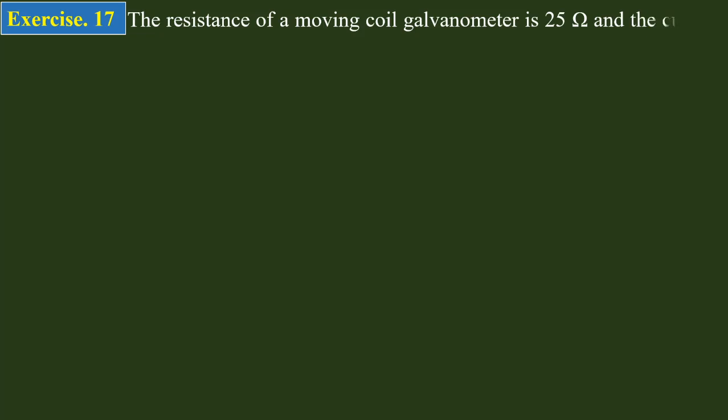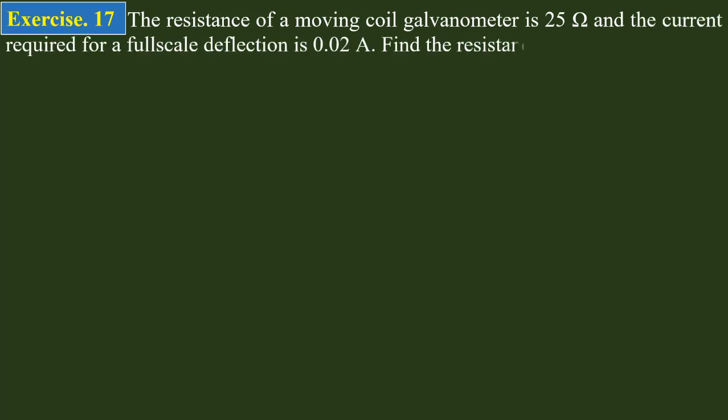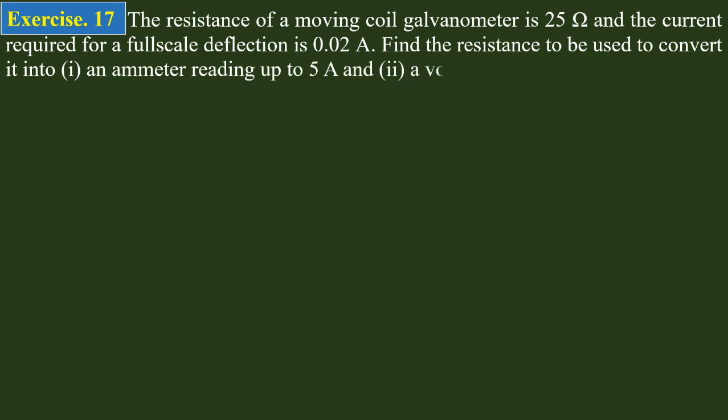The resistance of a moving galvanometer is 25 ohms, and the current required for full-scale deflection is 0.02 ampere. Find the resistance to be used to convert it into an ammeter reading up to 5 amperes, and a voltmeter reading up to 150 volts.